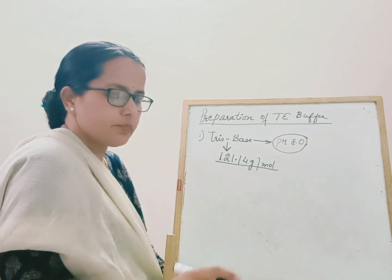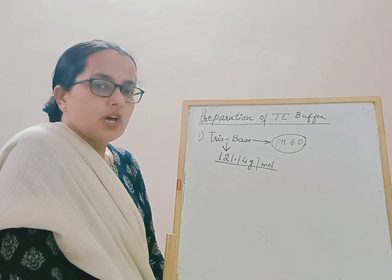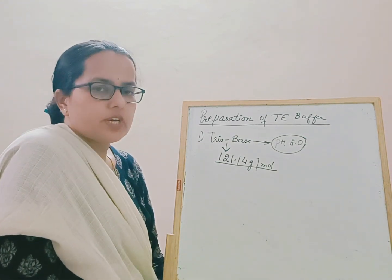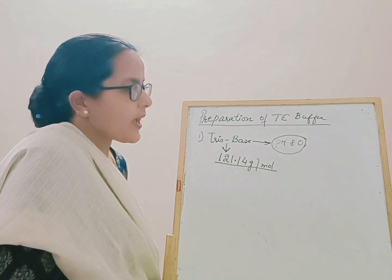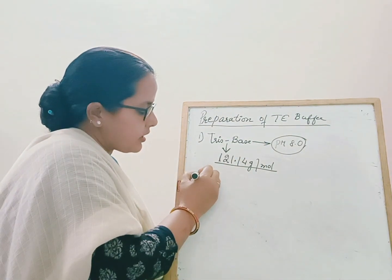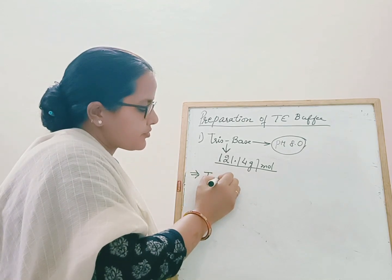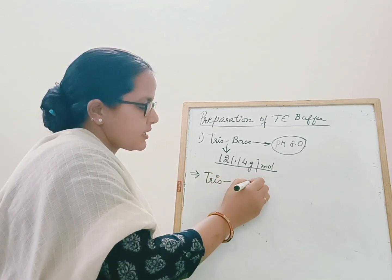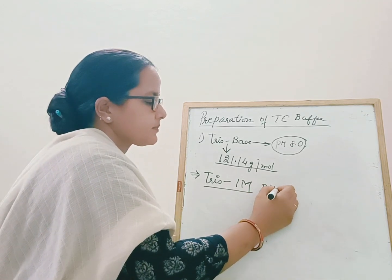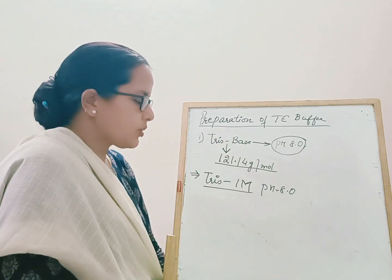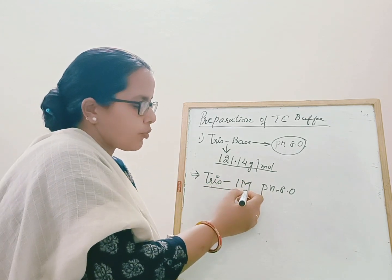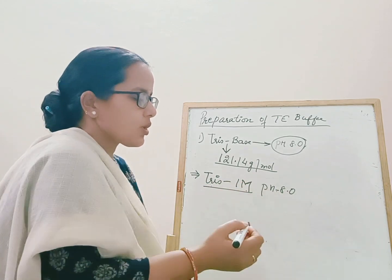You have to calculate how much to weigh based on the desired molarity. When working in molecular biology, it is better to prepare stocks of higher molarity. Here we will prepare a stock solution of 1 molar Tris base at pH 8.